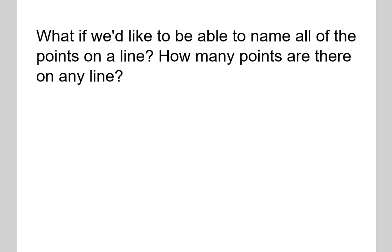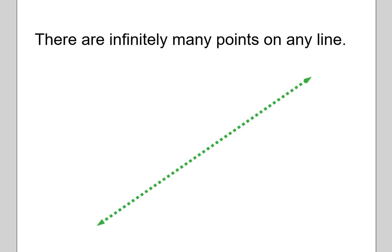The next question is: what if we would like to name all of the points on a line? How could we do that? Well, that should lead you to the next question: how many points are there on any line? Can you just write out a bunch of ordered pairs and eventually have written down all of the points? The answer is no — you cannot, because there are infinitely many points on any line, since the line extends in both directions toward infinity.